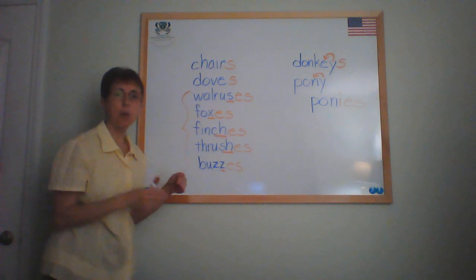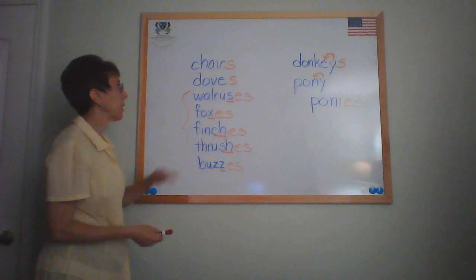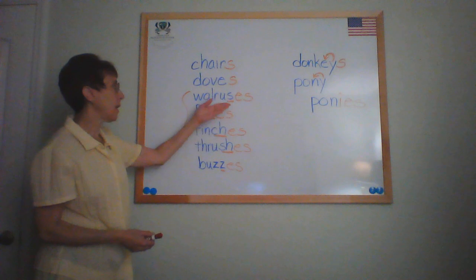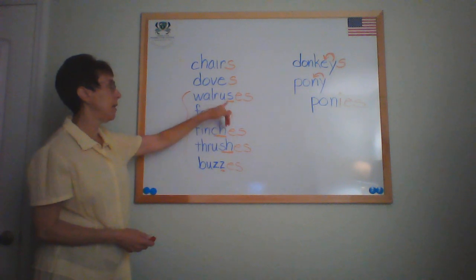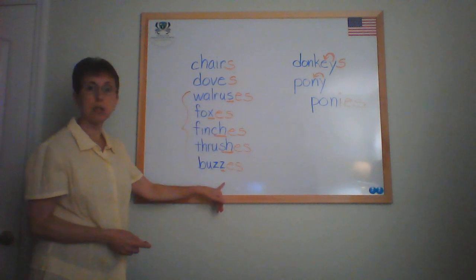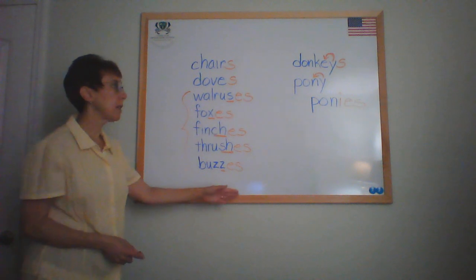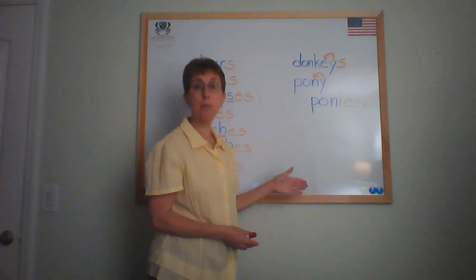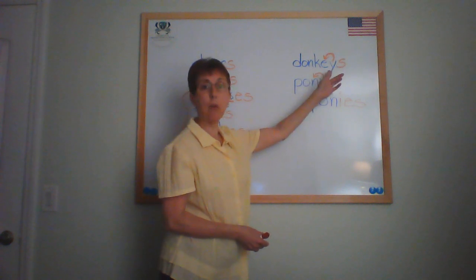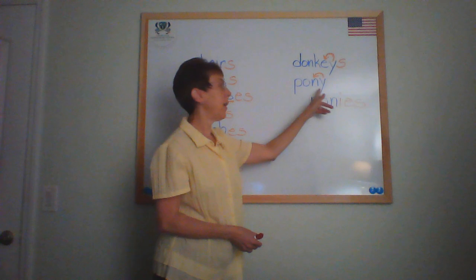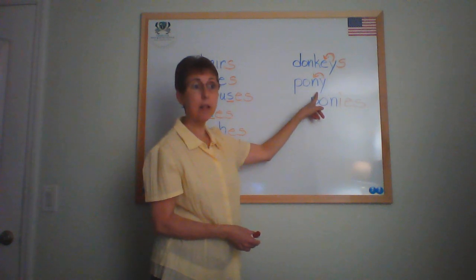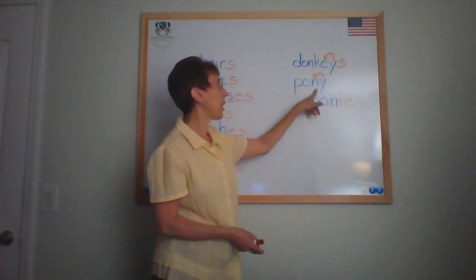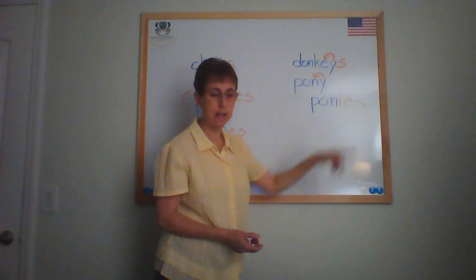Let's go back one more time and review. Most nouns, you simply add S, with the exception of nouns that end in S, X, CH, SH, or Z — then you add ES. Nouns that end in Y: always look at the letter that comes right before the Y. When it's a vowel, you just add S. When it's a consonant — remember A, E, I, O, and U are your vowels — you change the Y to an I and add ES.